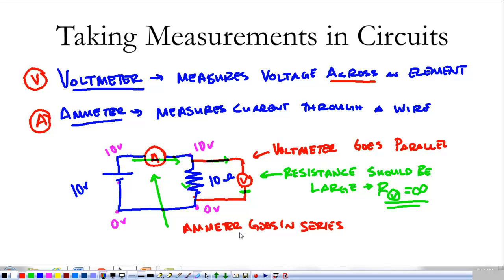We want it to be in the way of the current, we want the current to run through it so that we can measure it. But we don't want the ammeter to affect anything. We don't want the ammeter to change that current in any way, nor do we want it to have a different potential difference between these two points.